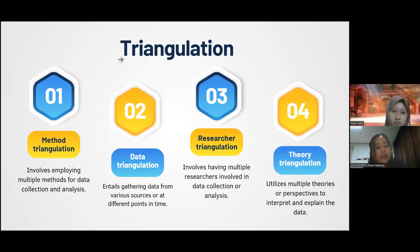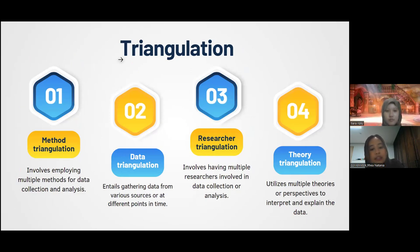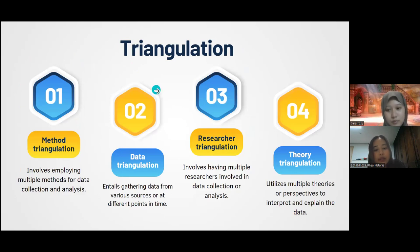There are four types of triangulation. The first is method triangulation, which involves employing multiple methods for data collection and analysis. The second is data triangulation, which entails gathering data from various sources or at different points in time. The third is researcher triangulation, involving multiple researchers in data collection and analysis. The last is theory triangulation, which utilizes multiple theories or perspectives to interpret and explain the data.